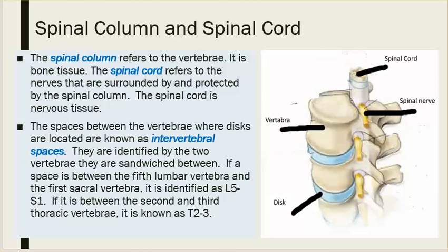This condition can cause pain in any area of the body that is affected by that nerve. The spinal column refers to the vertebrae — it is bone tissue. The spinal cord refers to the nerves that are surrounded by and protected by the spinal column. The spinal cord is nervous tissue.